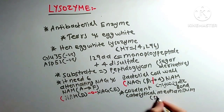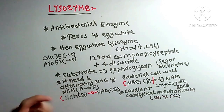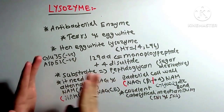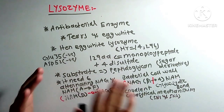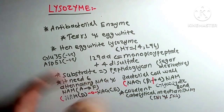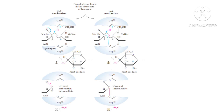As you know, covalent catalysis is of two types: SN1 (nucleophilic substitution unimolecular reaction) and SN2 (bimolecular reaction). Lysozyme performs its catalysis — cleaving the glycosidic bond — through both these mechanisms. Let's discuss the mechanisms with the help of pictures. Lysozyme acts on this peptidoglycan and cleaves it, catalyzing via two different mechanisms: SN1 type and SN2 type.